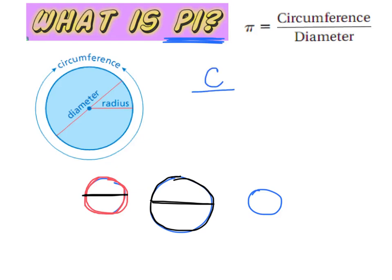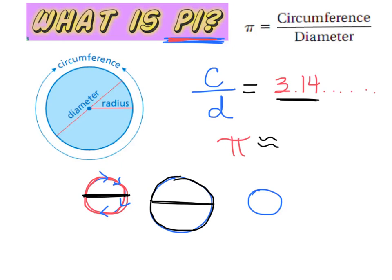They figured out if you took whatever the circumference was — all the way around the outside — and divided it by whatever the diameter was — across the middle — every time they divided that out, they got the same number. It was a really weird number that never ends: 3.14159, keeps going forever. They decided to call that number pi. When we use 3.14 for pi, that's not exact — we'll use this approximately-equal symbol. We're always going to use 3.14 on our calculator.